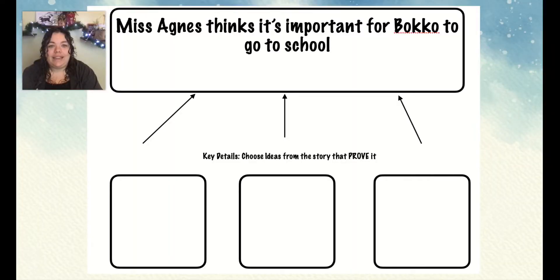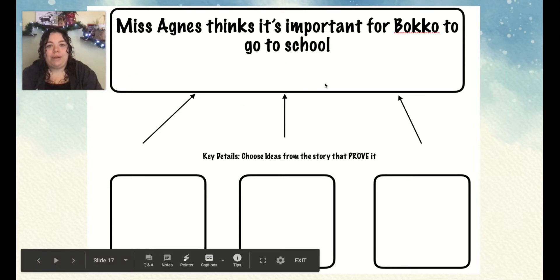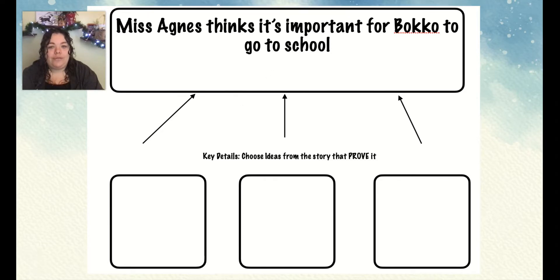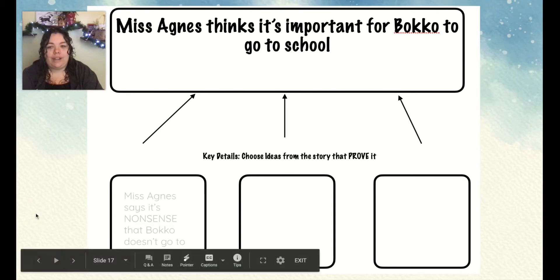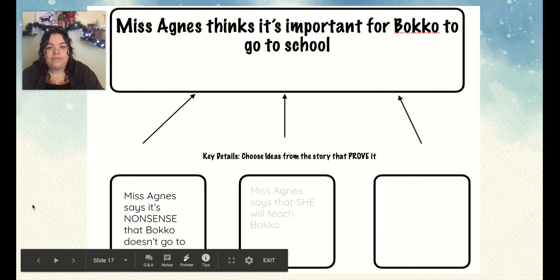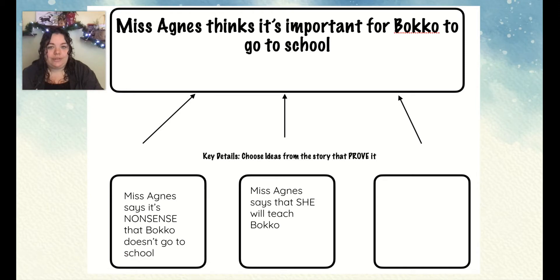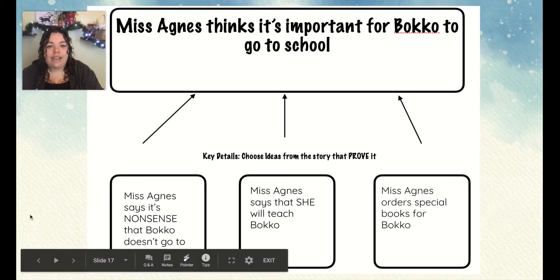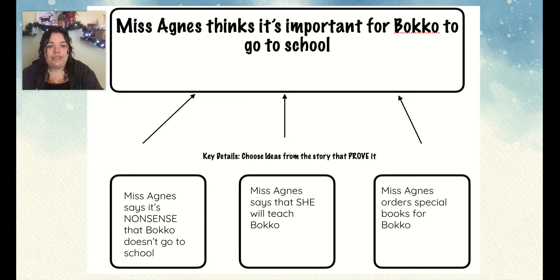While reading, I can use a chart like this to prove and show the main idea. My main idea is that Miss Agnes thinks it's important for Boko to go to school. Then I can look for details to prove that. First, Miss Agnes says it's nonsense that Boko doesn't go to school. Second, Miss Agnes says that she will teach Boko, which shows she thinks it's important. And third, Miss Agnes orders special books for Boko, showing she thinks it must be important because she even got special books for her.